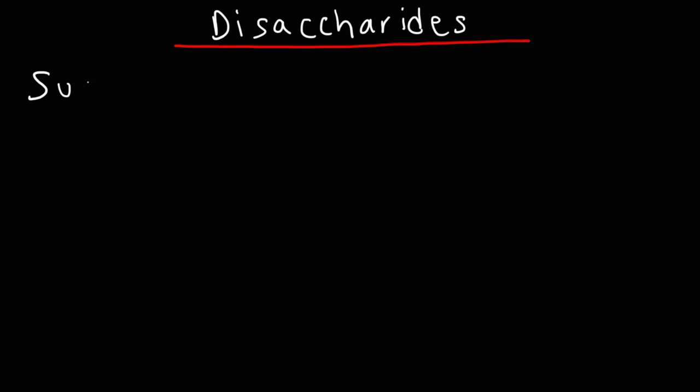The first one we're going to talk about is sucrose. Sucrose is composed of the monosaccharides glucose and fructose. Sucrose is basically table sugar. You've seen it almost every day.